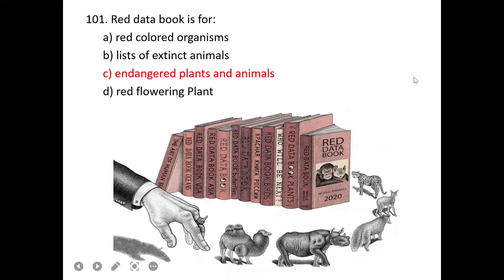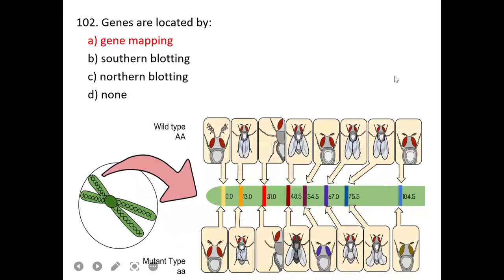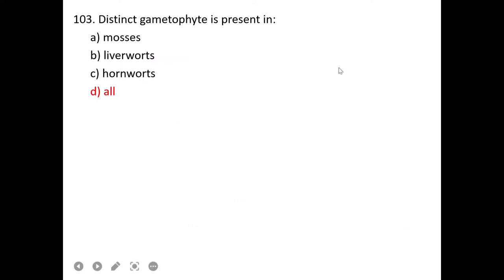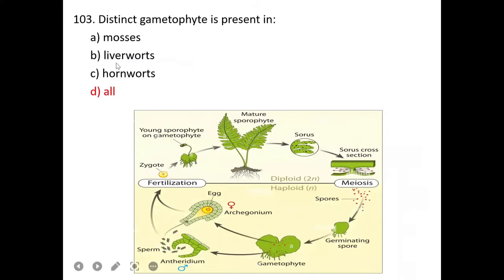Genes are located by gene mapping. The location of genes can be determined through gene mapping. Distinct gametophyte is present in mosses, liverworts, and hornworts. D is correct.